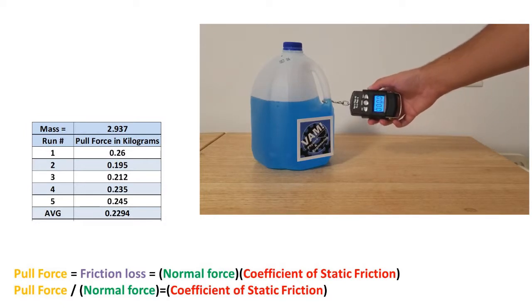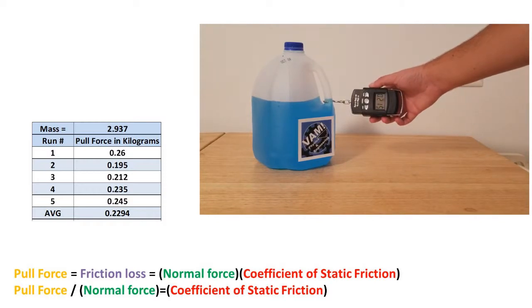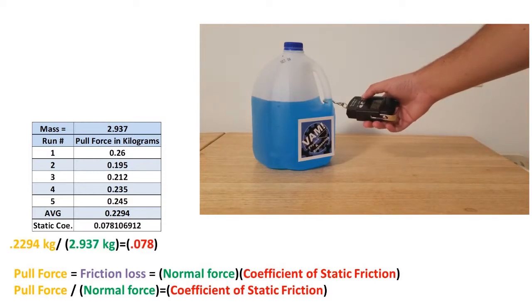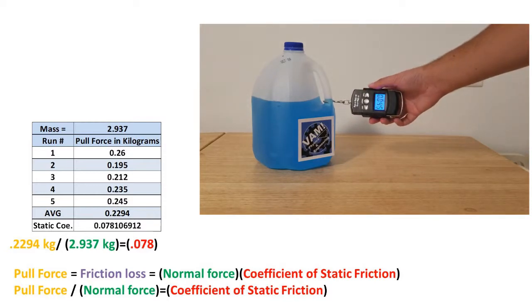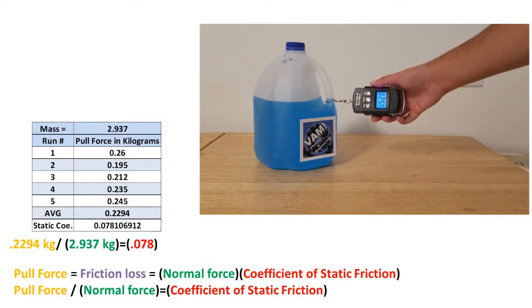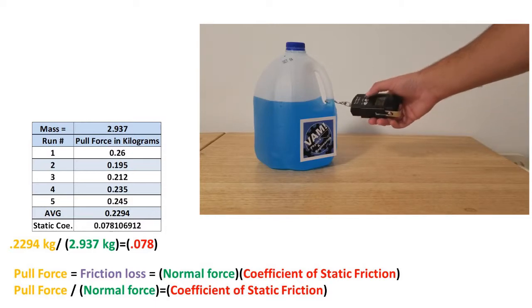I have listed on this slide the experimental pull force just before the jug began to move. I then took the average of this data. After plugging in our numbers into the coefficient of static friction formula, we get a coefficient of static friction of 0.078.